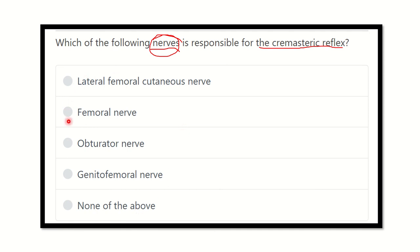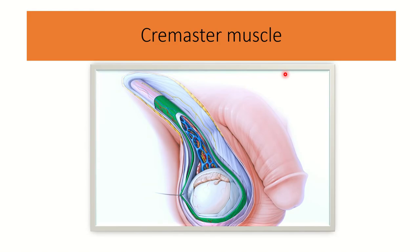We need to find out which nerve is responsible for the cremasteric reflex. Here we can see a cross section of the hemi-scrotum. The green color muscle shown is the cremasteric muscle, which lies around the scrotum.